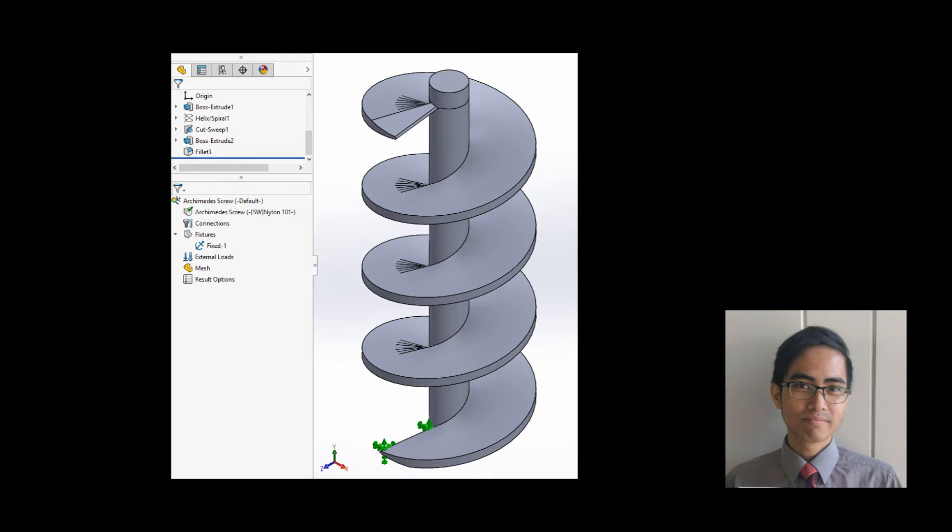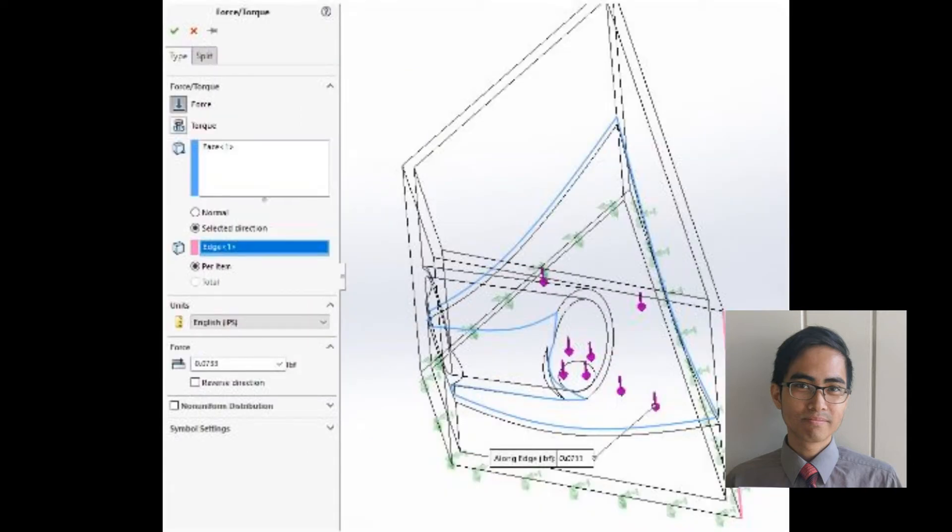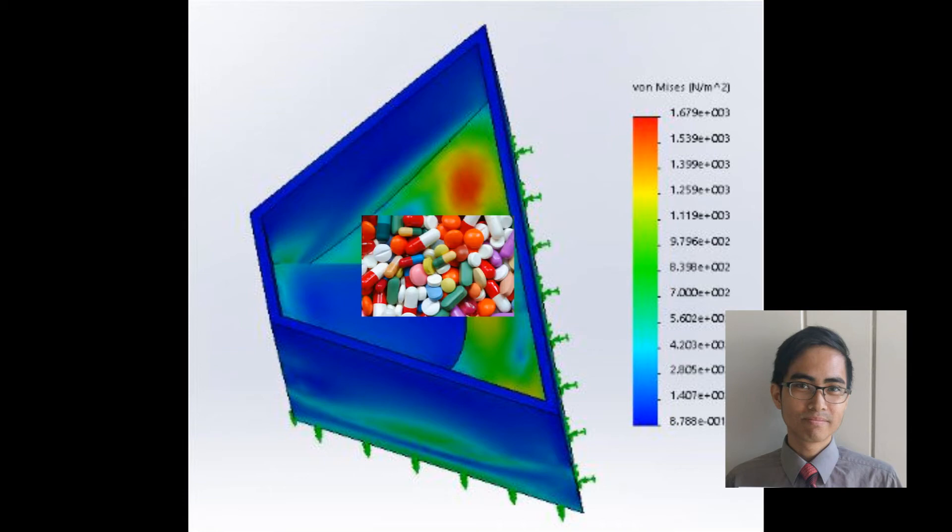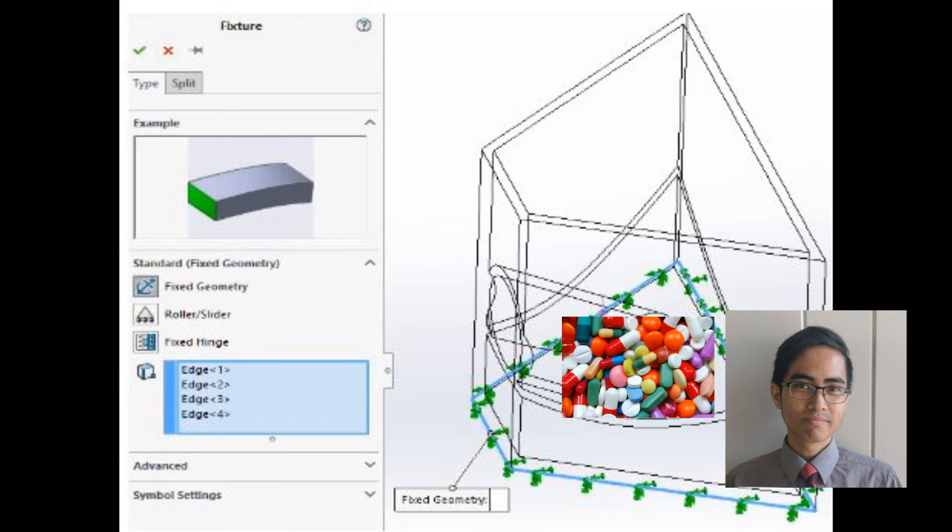Also, there was one external load applied to the reservoir. When in operation, each reservoir will be filled with pills for dispensing. We calculated each reservoir to hold an average of 350 pills. The average load applied on the reservoir from the pills was calculated to be equal to 0.0733 pound force. The four bottom edges of each reservoir are fixed.